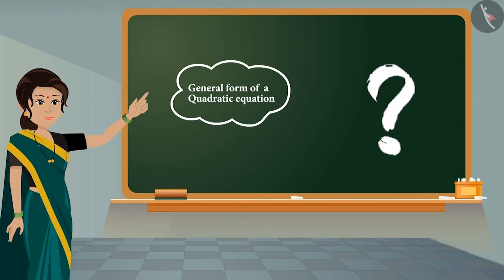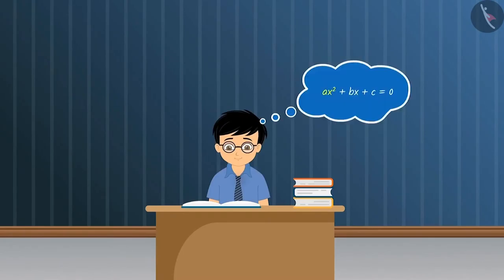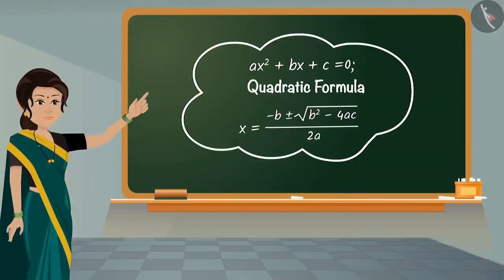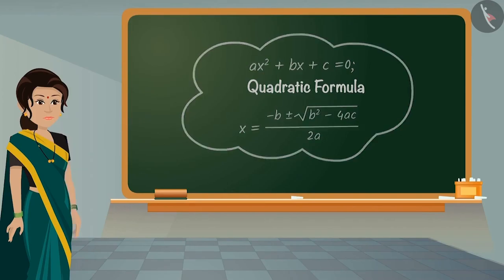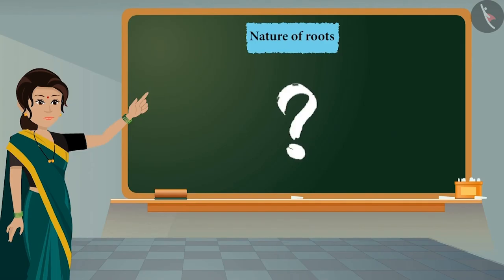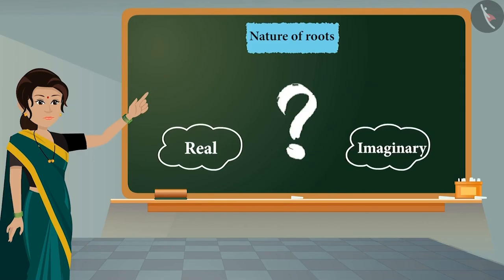Can you say what will be the general form of a quadratic equation? Ax² + bx + c = 0 is the general form of a quadratic equation. We saw in our previous video that roots of a quadratic equation can be obtained with the help of the quadratic formula. Do you know what will be the nature of roots of a quadratic equation? Are they real or imaginary? Let's see how we can find it.